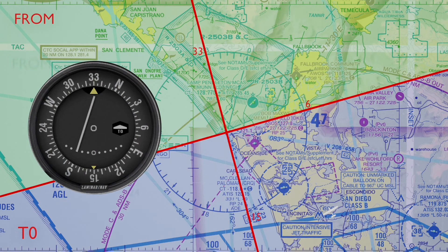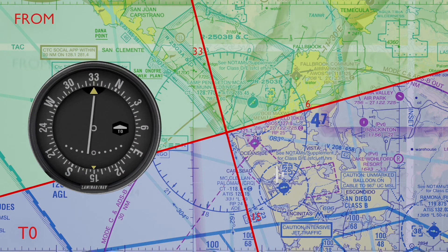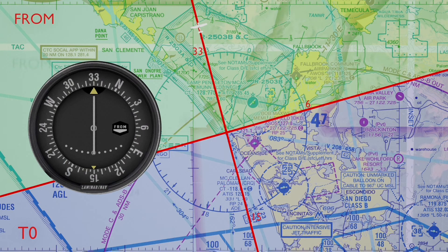Once your aircraft is aligned to 330, look at your instrument and the needle. The needle here is to the left, meaning we need to turn left to get back on course — we're off course to the right. Next, turn 90 degrees in the direction the needle is telling you, which is to the left, so 90 degrees left to 240. As you do this, you can see the needle starting to center. As it gets to center, roll back out to 330. You will now have intercepted the radial and be tracking the 330 radial.